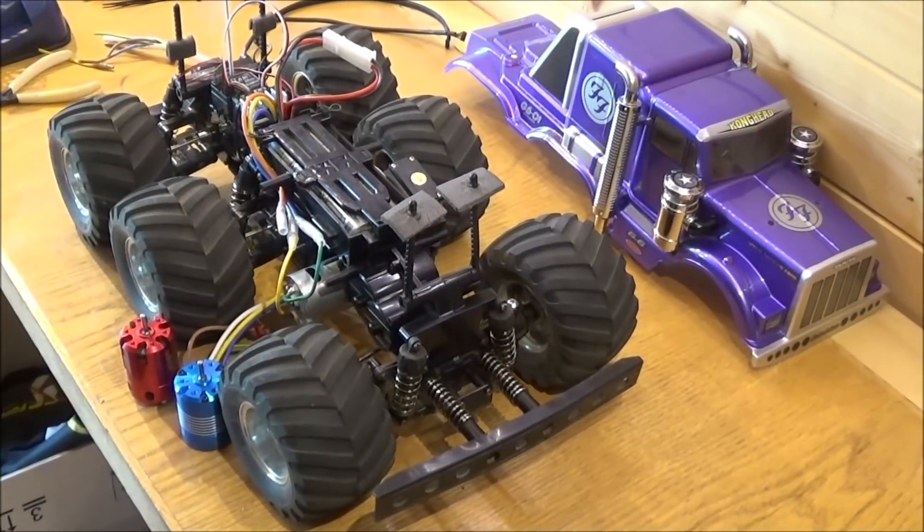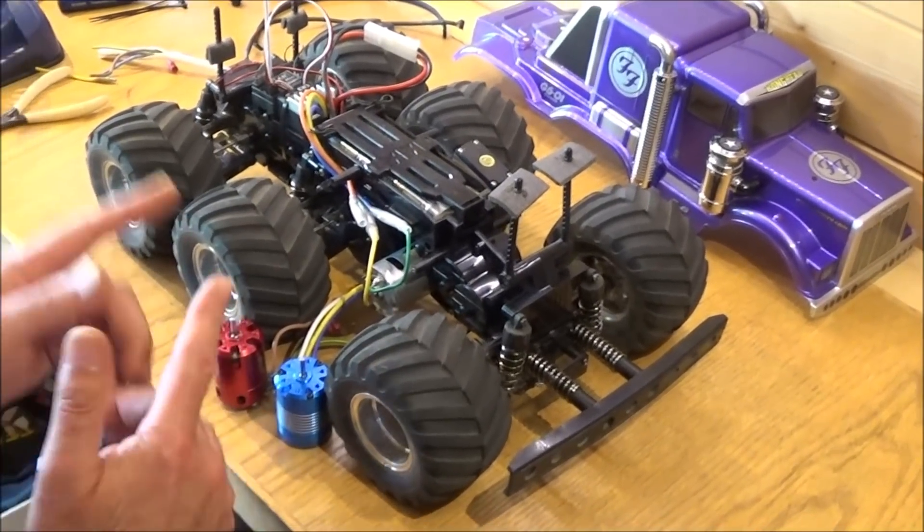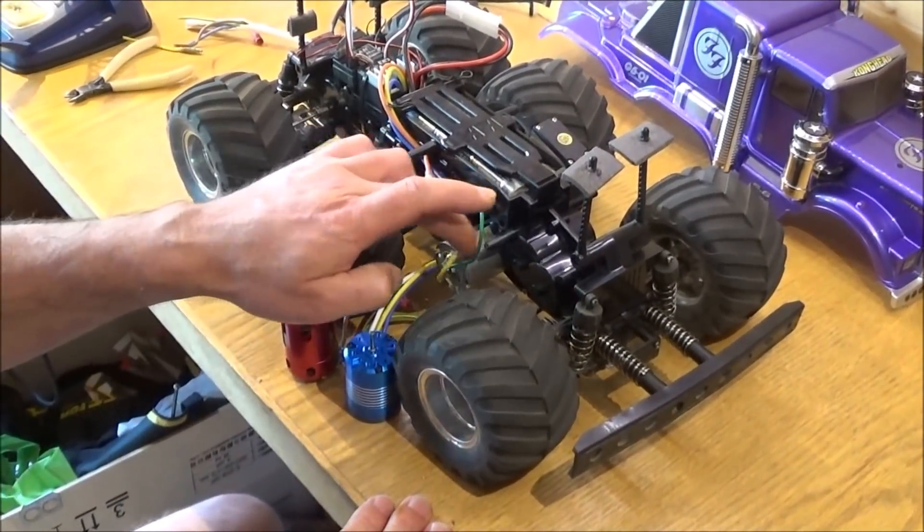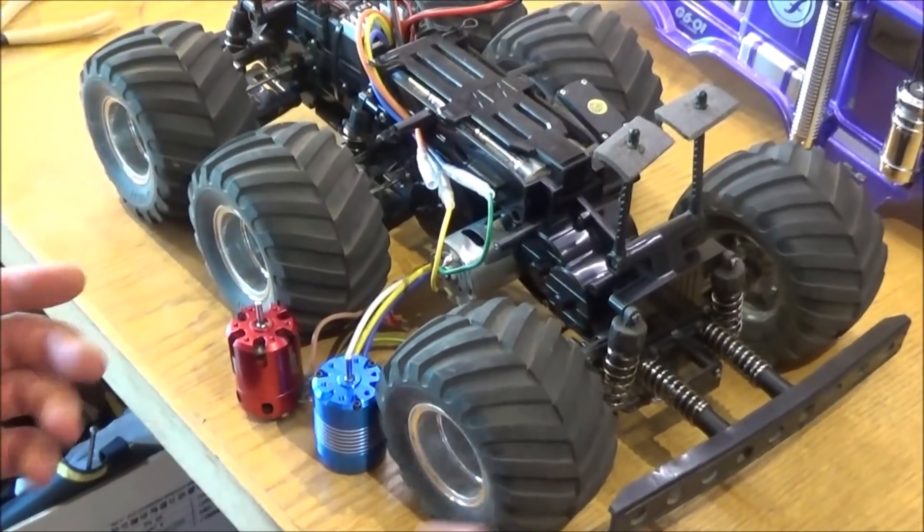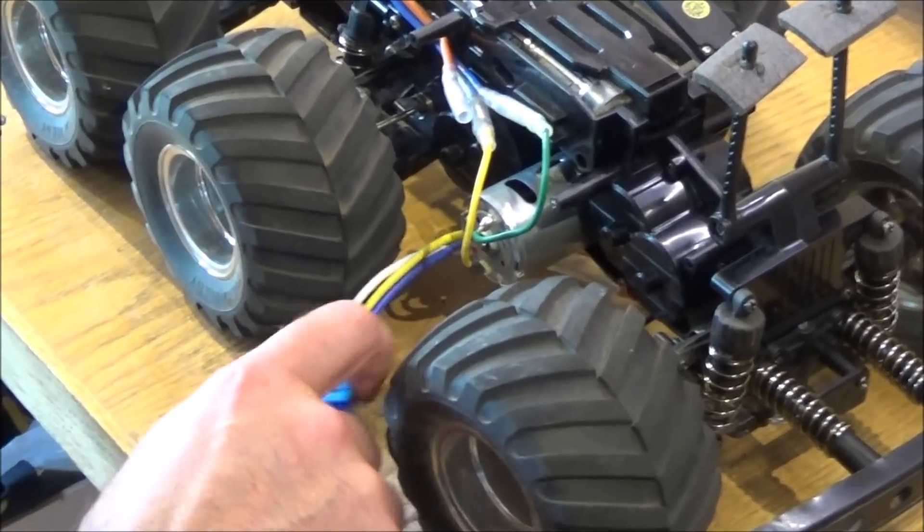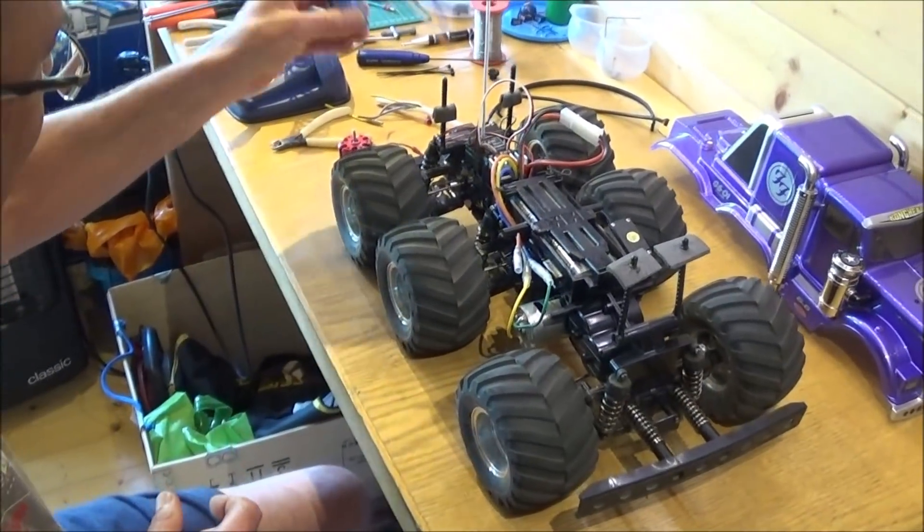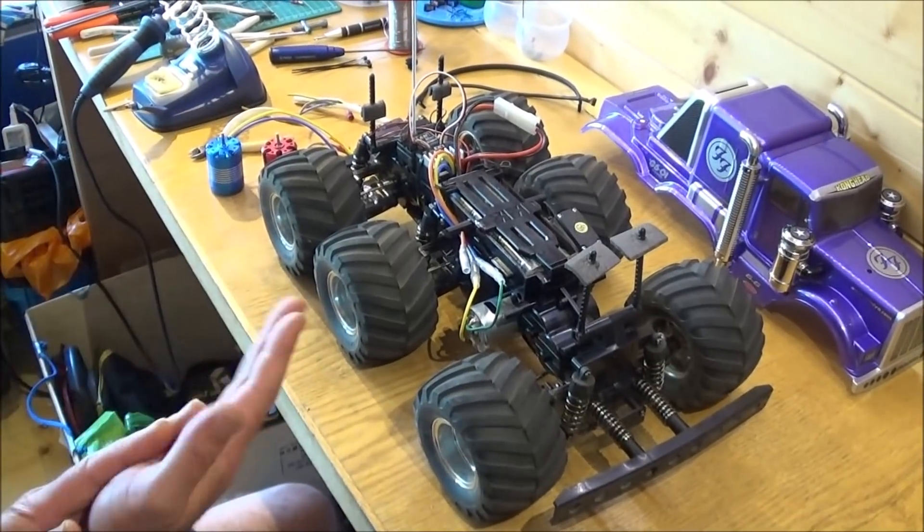Hi there, Mark here. Got Rob on the camera. Today we're going to show you how to change your standard silver can in a Cong Head for a brushless motor. If you've got a Cong Head with a standard silver can, I think you'll know why we want to change it because it's not that quick.